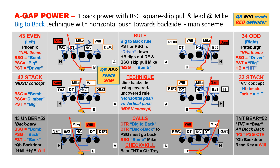The quarterback reads the Sam backer. Against the bear — the exception shown in the bottom right — we all need to block back in a man principle, so we simply use a back-back call passed from the center all the way to the tackle. The backside guard still pulls and bomb blocks on the mic, but now the quarterback will read the Will as a conflict defender. The theme is NFL with Phoenix to the left and Pittsburgh to the right.